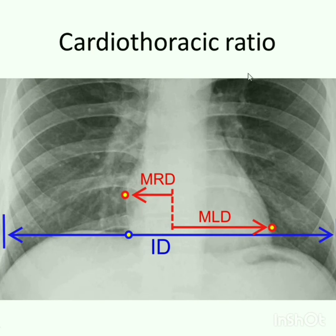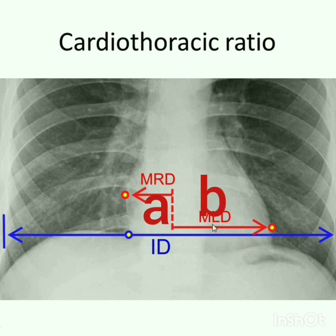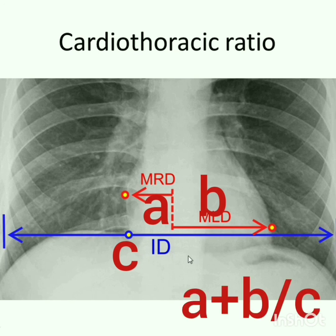How to measure cardiothoracic ratio: draw a straight line passing through the spinous processes, then take the farthest point on the right heart border and the left heart border, measuring these distances — let them be A and B respectively. Then measure the farthest points on the diaphragm, let this be C. The cardiothoracic ratio is A plus B divided by C. If this ratio is more than 50 percent, we say cardiomegaly; if it is less than 50 percent, it is normal.